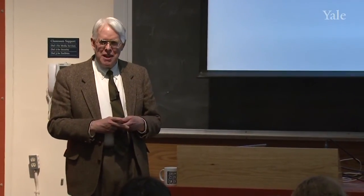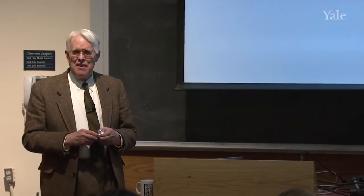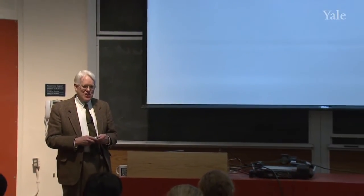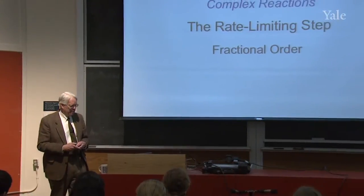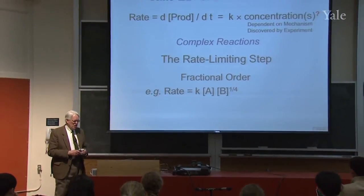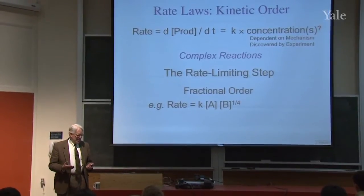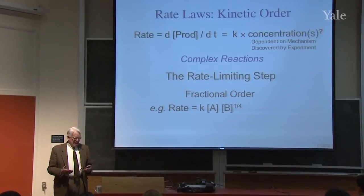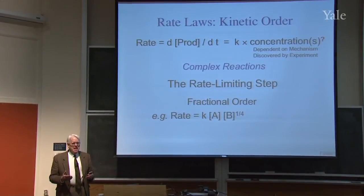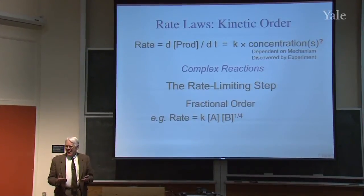Now we're going to look at some complex reactions and how they can get weird orders, like fractional orders or even inverse orders. So a fractional order — suppose the rate is proportional to some rate constant times the concentration of A times the concentration of B to the one-fourth power. How can that be? How can you have a fourth of a molecule participate in a reaction?